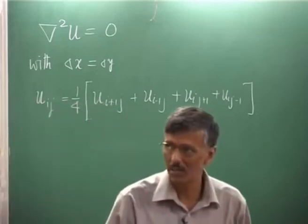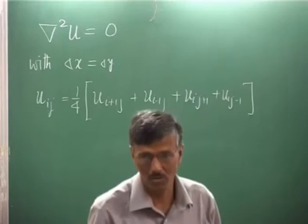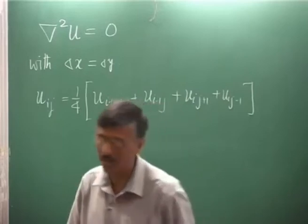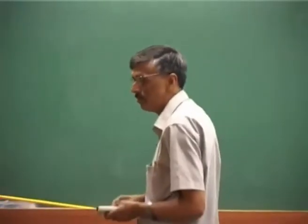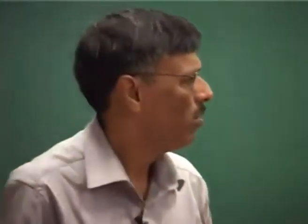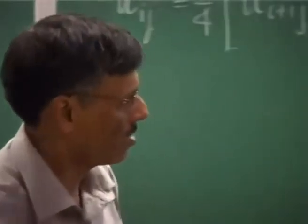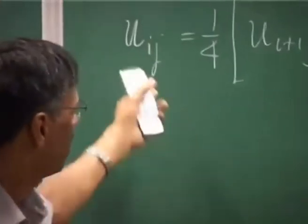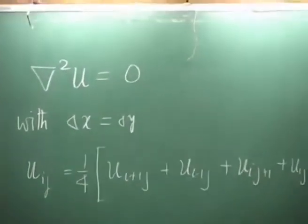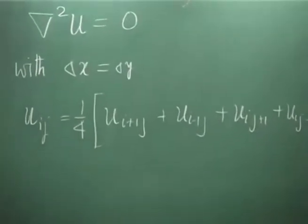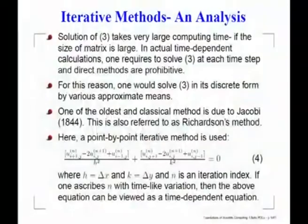That maximum principle does not generalize to the Poisson equation, where you have a non-trivial right-hand side. Direct solution of these linear algebraic equations takes enormous effort with an n-by-n matrix — it amounts to O(n³) operations — whereas iterative methods offer the hope of less work.